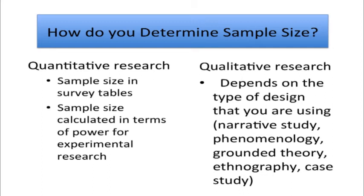In terms of sampling and sample size, there are different ways of sampling in quantitative and qualitative research. In quantitative research, we can turn to sample size formulas for survey projects, or calculate sample size based on power formulas for experimental research — very rigorous, systematic ways of deriving sample size. In qualitative research, on the other hand, the sample size depends on the type of design being used, varying from a very small sample such as narrative research to a fairly large sample in ethnography or grounded theory.